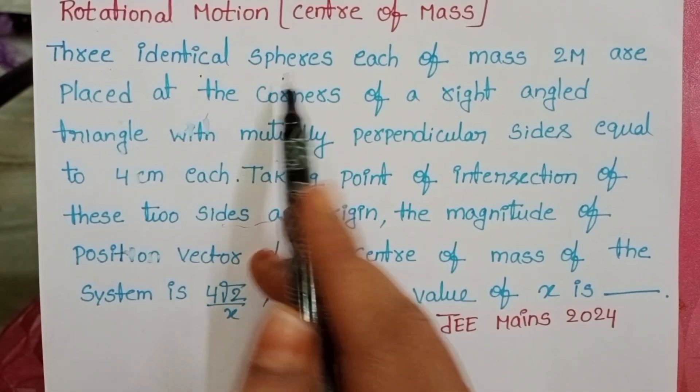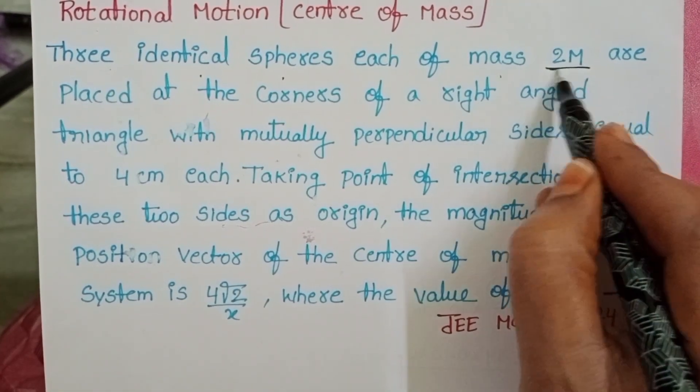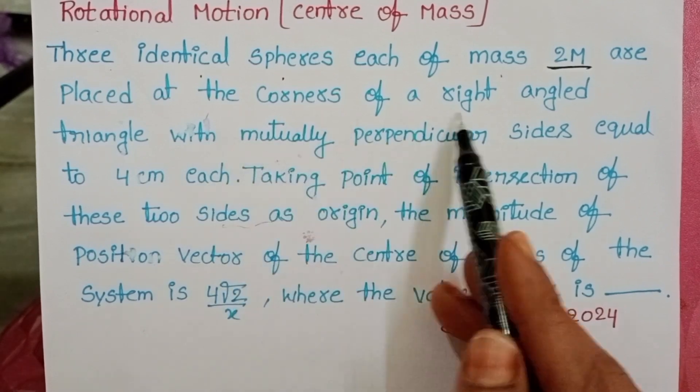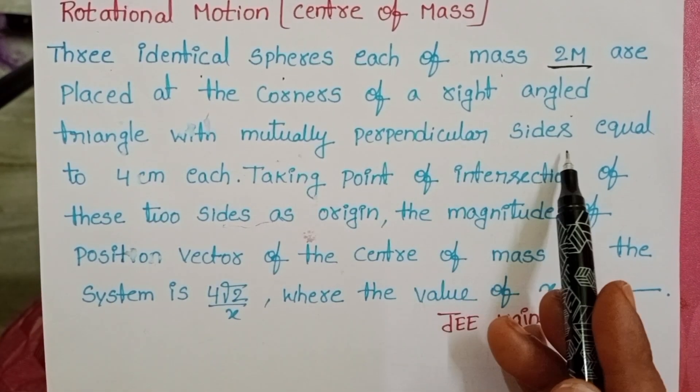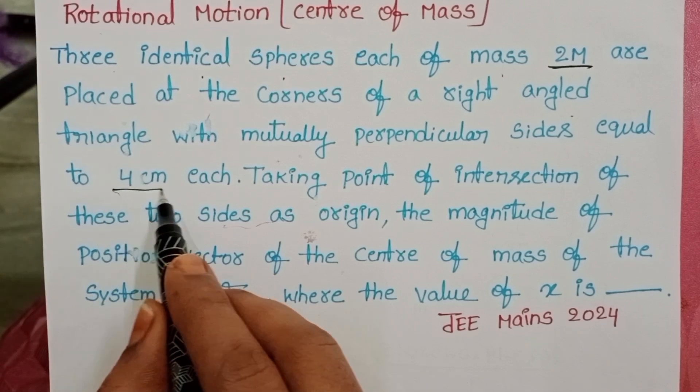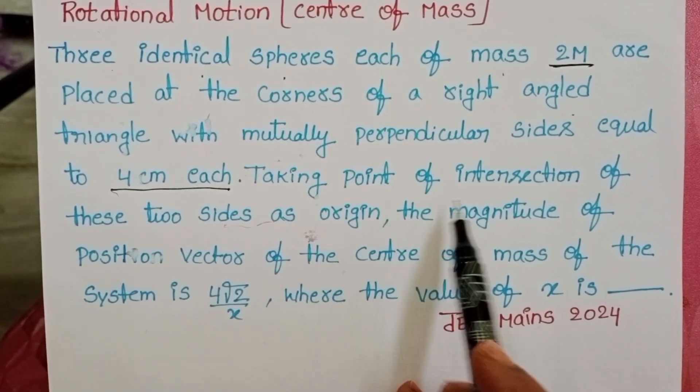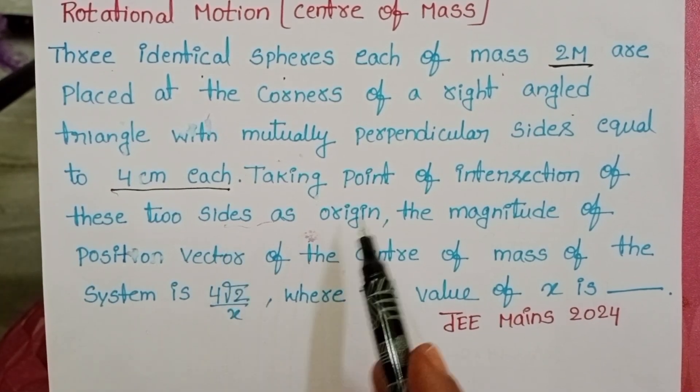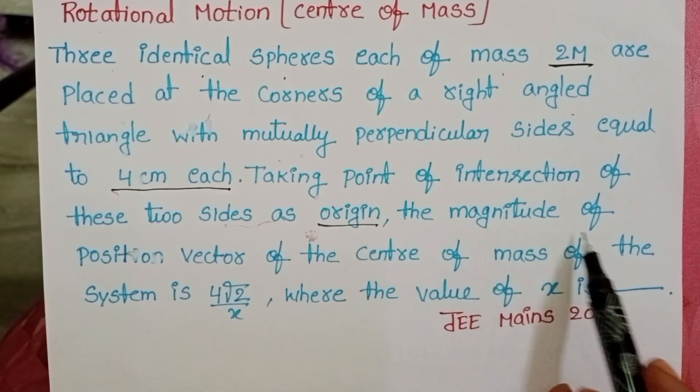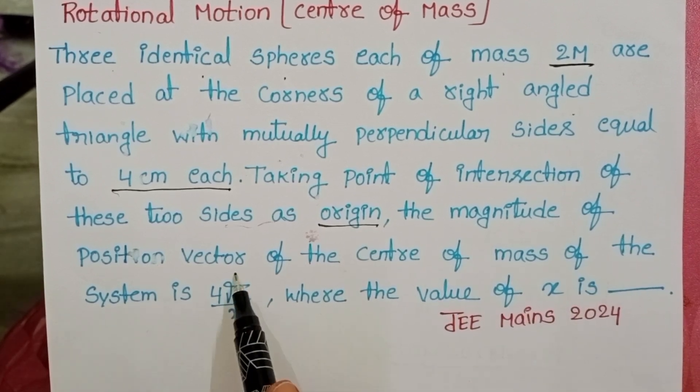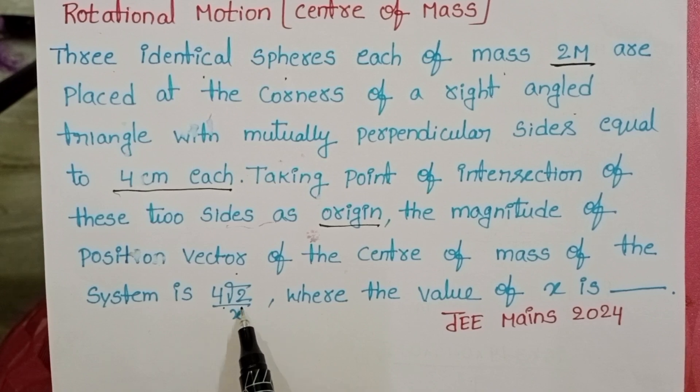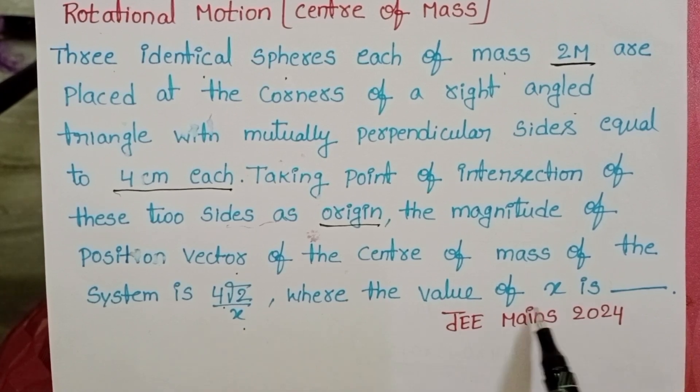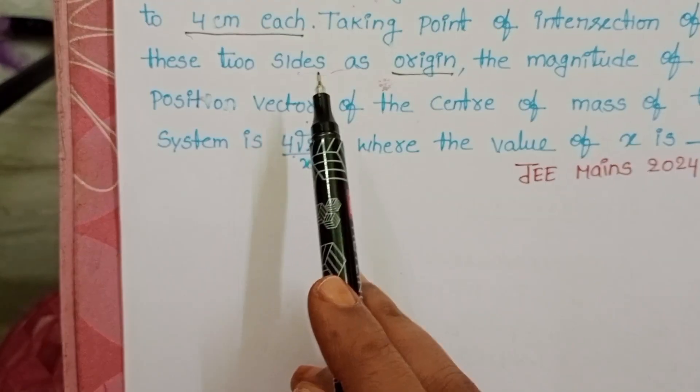Three identical spheres, each of mass 2m, are placed at the corners of a right-angled triangle with mutually perpendicular sides equal to 4 cm each. The point of intersection of these two sides has origin. The magnitude of position vector of the center of mass of the system is 4 square root of 2 by x where the value of x is.